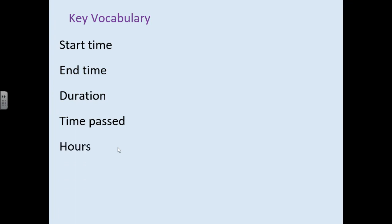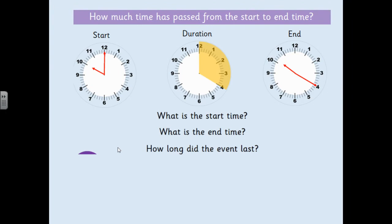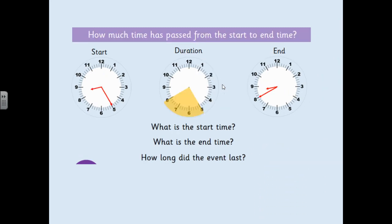What we're going to look at is how much time has passed from the start to end time. Looking at the clocks here, the start time is 10 o'clock and the end time is 20 minutes past 10. The minute hand was on 12, now it's gone on to 4. We count in fives from the starting point: 5, 10, 15, 20. So the event was 20 minutes long.